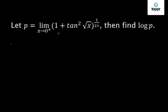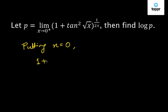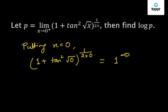Here the limit is of the form 1 to the power infinity. If we put x equal to 0 in this function, we get (1 + tan√0) whole to the power 1 by (2×0), which is of the form 1 to the power infinity. This is an indeterminate form.